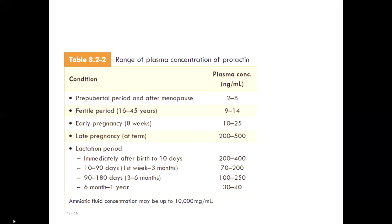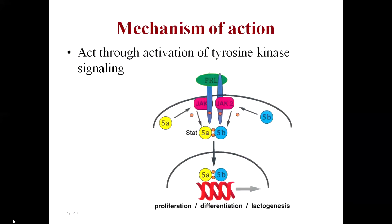The mechanism of action of prolactin is associated with the JAK — Janus tyrosine kinase — signaling pathway. The receptor of prolactin is a single transmembrane receptor present in targeted tissues. When prolactin binds with its receptor on a target tissue, it activates the associated Janus tyrosine kinase.